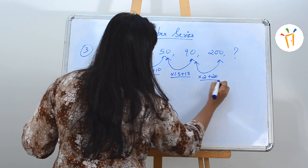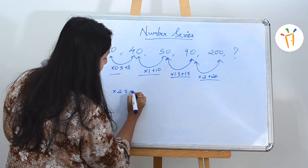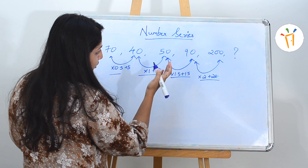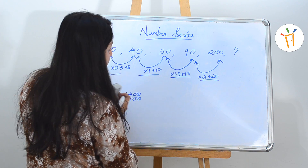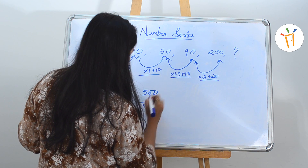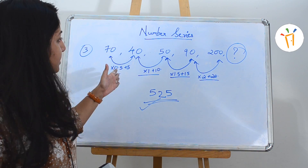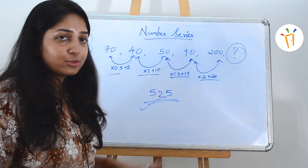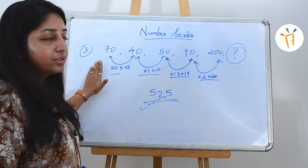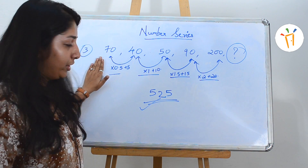So the pattern is confirmed. The next number should be multiplied by 2.5 and added by 25. So 200 into 2.5: 200 into 2 is 400, and 200 into 0.5 is 100, giving 500, plus 25 is 525. The next number in the series is 525. Remember: if the second number is close to half the first and close to the third, start by multiplying the first number by 0.5.